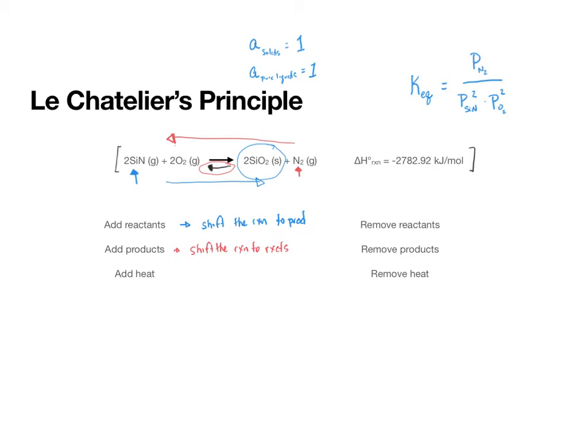Now, if we add heat, when we add or remove heat, we have to think about whether this reaction is endothermic or exothermic. In this case, this reaction is exothermic. So, this means that we can think of heat as a product. And so, if we add heat, this is the same thing as adding a product. And so, we are going to shift to the reactants.